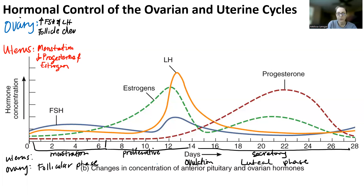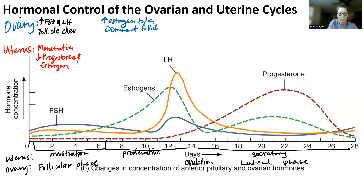In the proliferative phase and the follicular phase, we're going to start to increase estrogen — we increase estrogen because we have one dominant follicle. You should see how FSH and LH are going to start to increase as well. As a result of that increasing estrogen, you're going to start to thicken the endometrial lining.